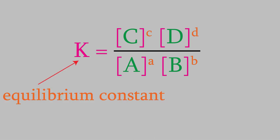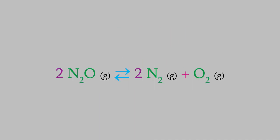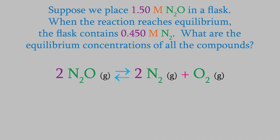It turns out that the equilibrium constant can tell us a lot about how compounds in a reaction are related to each other. For example, suppose we want to study this reaction. We start by filling a flask with 1.50 molar dinitrogen monoxide. We then let the reaction happen, and when it reaches equilibrium, the concentration of N2 is 0.450 molar. What are the concentrations of each compound at equilibrium?